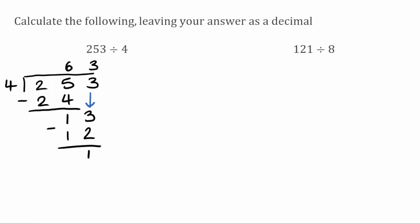The question asks us to leave our answer as a decimal, so what we're going to do is put a decimal after our 253, and put a decimal right above it next to our 63. We extend our line a little bit, and then next to the 253 I'm just going to put some zeros — I'll use three for now.